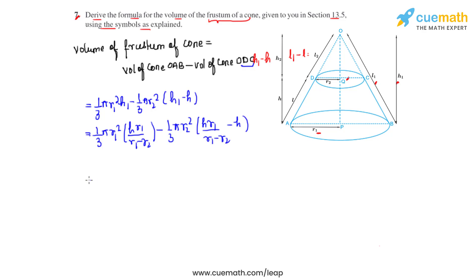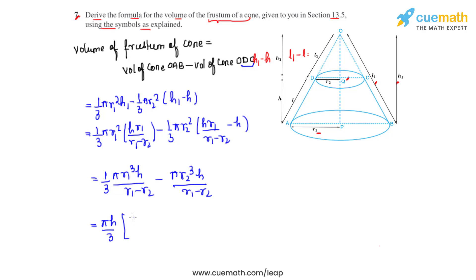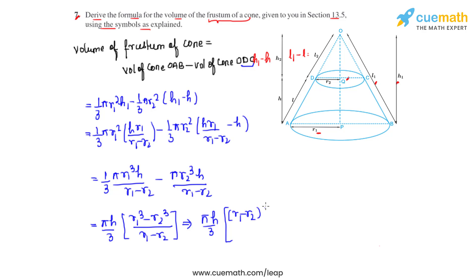On simplification we get (1/3)πR1³H divided by (R1 minus R2) minus πR2³H divided by (R1 minus R2). Taking πH/3 as common, we are left with (R1³ minus R2³) divided by (R1 minus R2). Making use of the identity a³ minus b³, we write R1³ minus R2³ as (R1 minus R2)(R1² + R2² + R1R2), divided by (R1 minus R2).